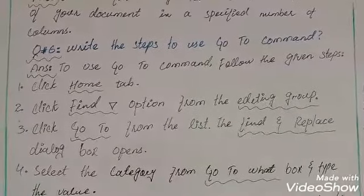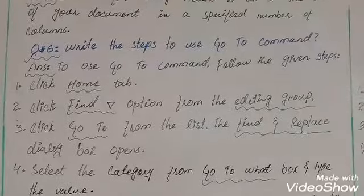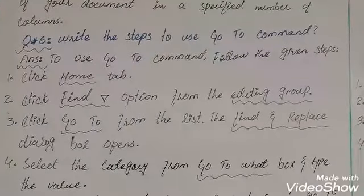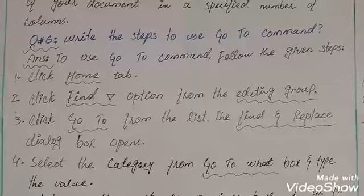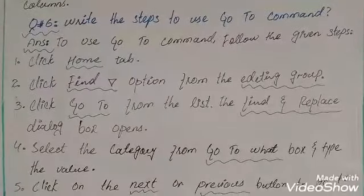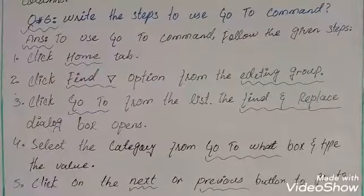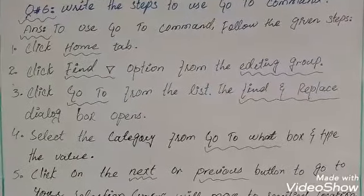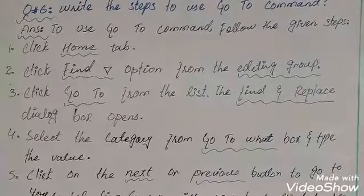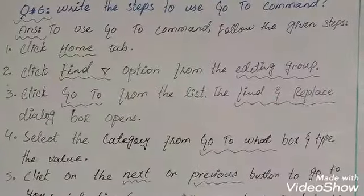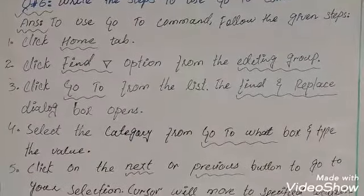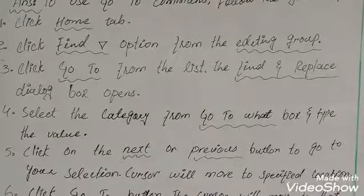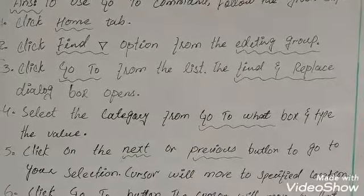Question number six: write the steps to use the Go To command. Answer: to use the Go To command, follow the given steps. Step one: click the Home tab. Step two: click the Find option from the Editing group. Step three: click Go To from the list. Step four: the Find and Replace dialog box opens. Select the category from the Go To What box and type the value.